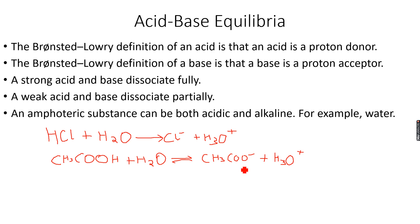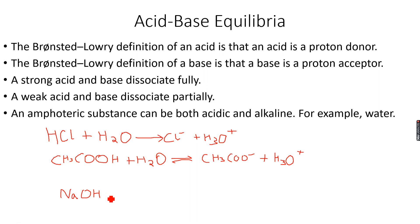HCl is a strong acid and ethanoic acid is a weak acid. Now let's look at bases. We have sodium hydroxide in aqueous solution. When sodium hydroxide dissociates, it gives Na+ plus OH-. It has completely and fully dissociated into Na+ and OH- ions.